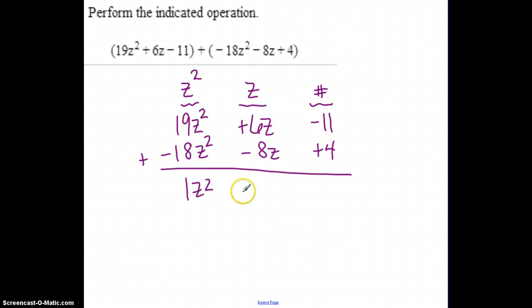So 1z squared, minus 2z, minus 7. Now I will tell you, most of the time, you're going to see that written like this. They're going to drop that 1 in front of the z squared, because it's the most simplified form. We already know there's a 1 that's assumed to be there, so we don't want to leave any extra stuff that we don't need to.